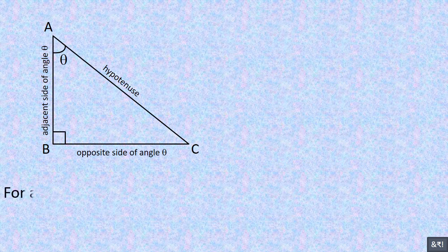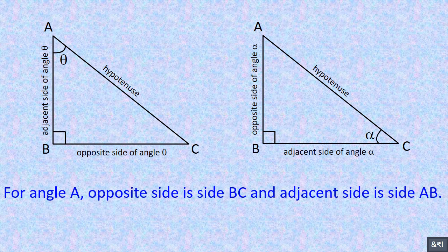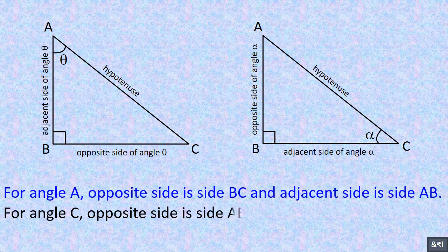For angle A, the opposite side is side BC and the adjacent side is side AB. For angle C, the opposite side is side AB and the adjacent side is side BC.